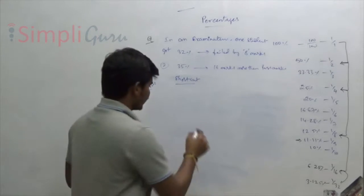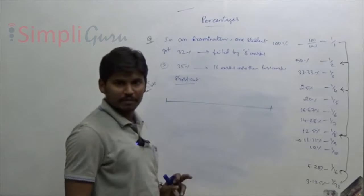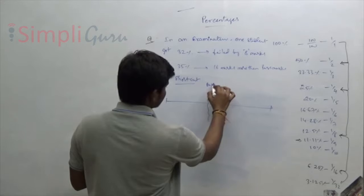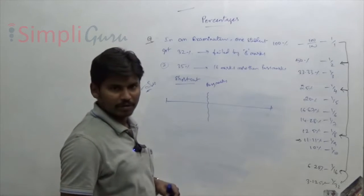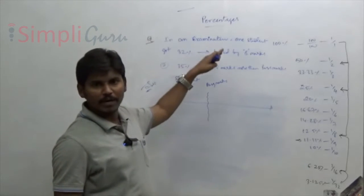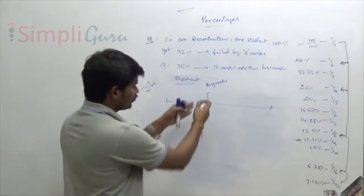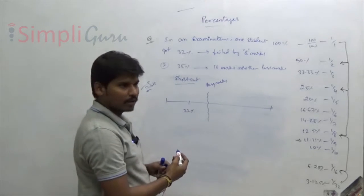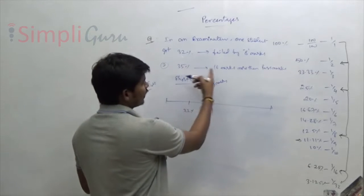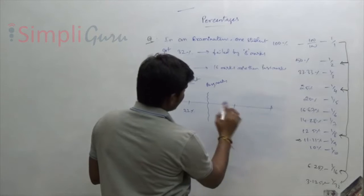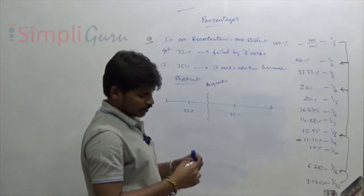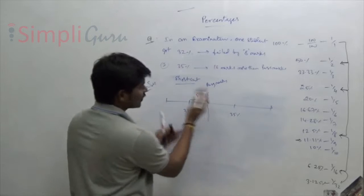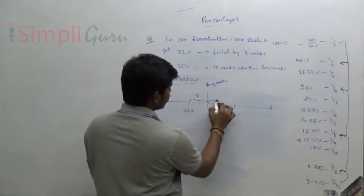For the shortcut, take total marks as 100%. The pass mark is somewhere in between. One student got 32% and failed by 8 marks, so 32% is below the pass mark. Another student got 35% and passed by 16 marks, so 35% is above the pass mark.